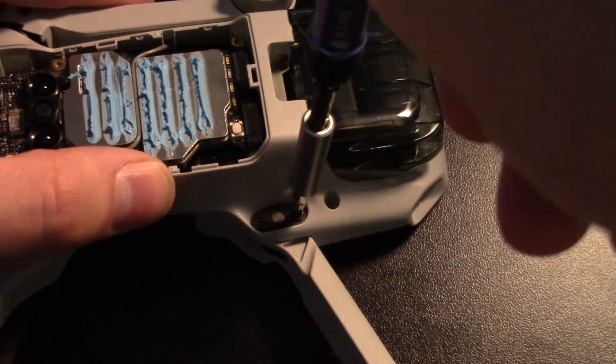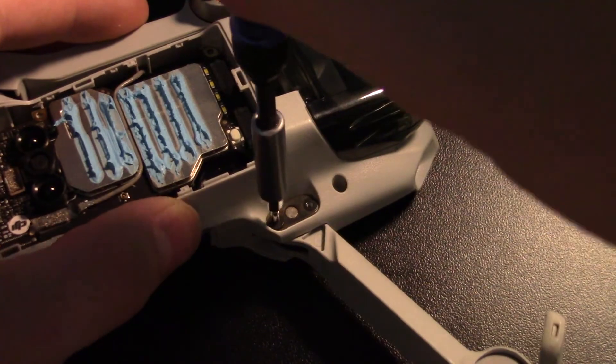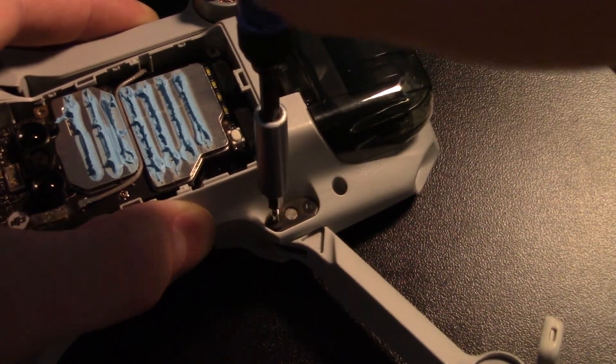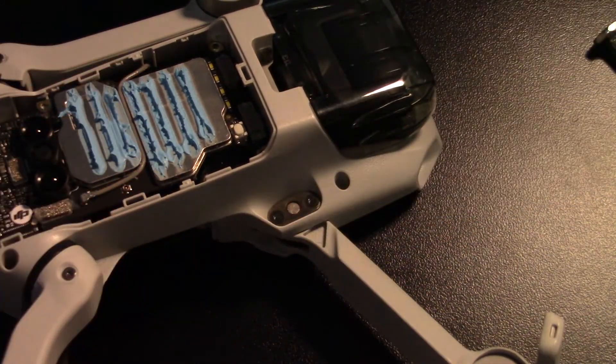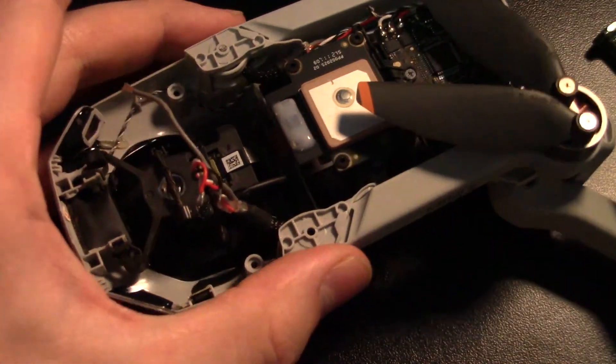Once all the wires and stuff are taken out, then you can work on the arm. There's two screws here and a pin that is in the center. You can push the pin out from the top side of the drone - it just pushes out.